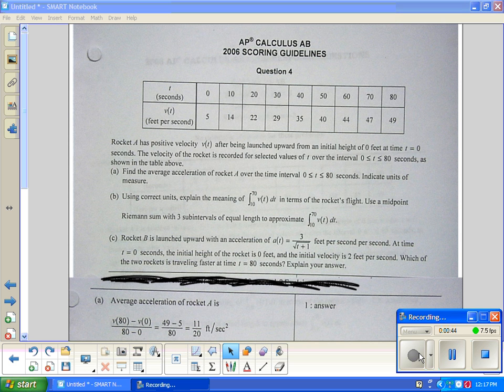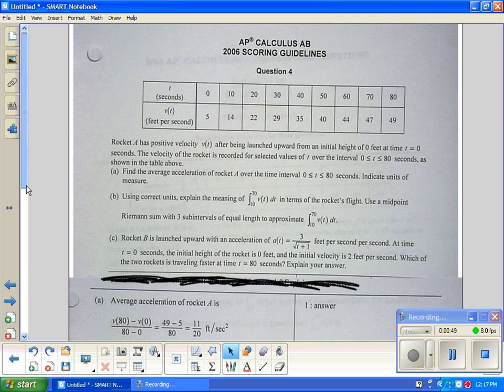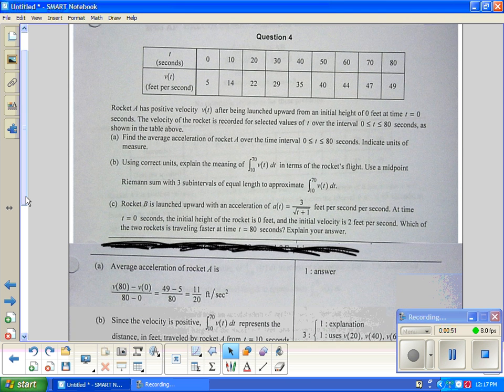It got 49 feet per second from 5 feet per second over eighty seconds. You notice down here you get one point for the answer eleven-twentieths. Now there is a point for units later on. So you should have 11/20 feet per second squared.